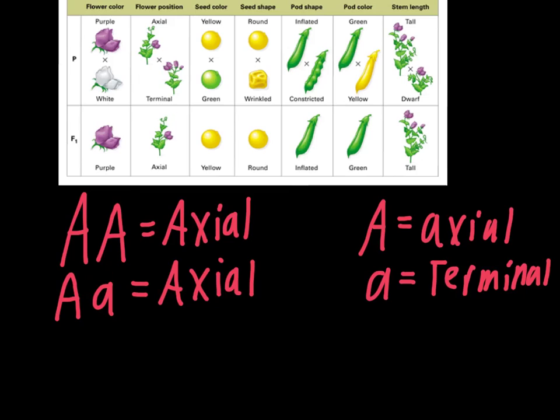So the only way to get one that's terminal would be to have one that's lowercase a, lowercase a. That would be terminal. The only way that would work would be if both of the parents were terminal. So instead of being axial terminal, this would have to be terminal and then a second terminal parent up there at the top.